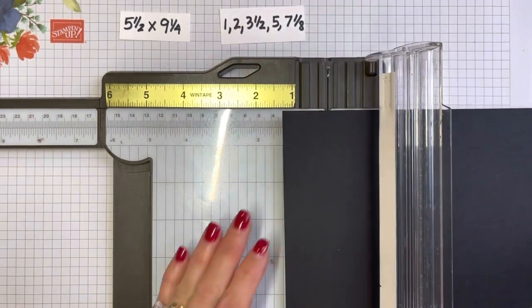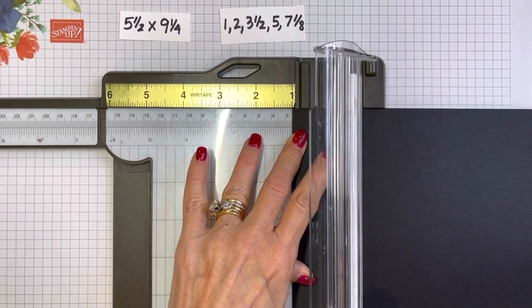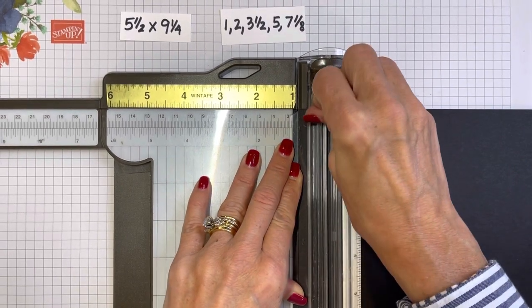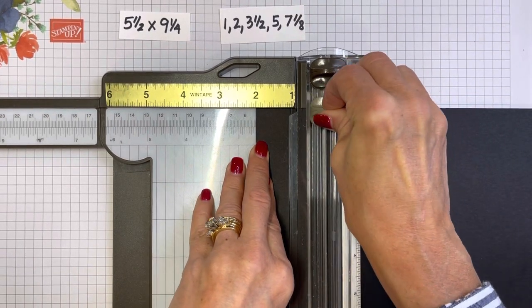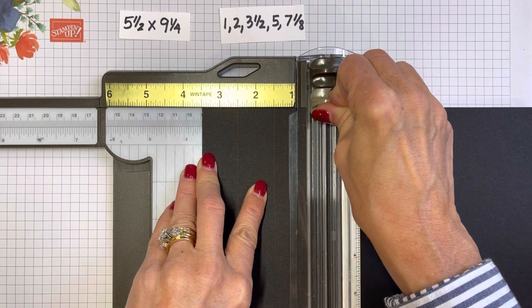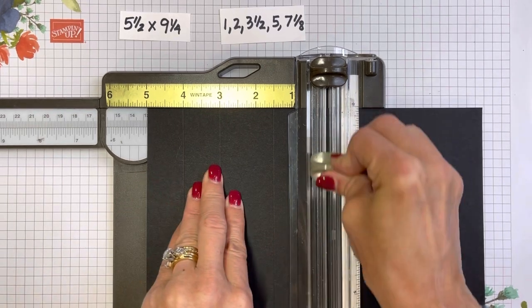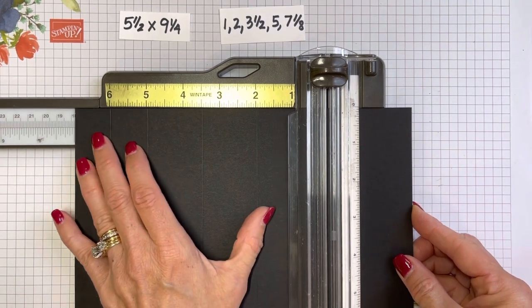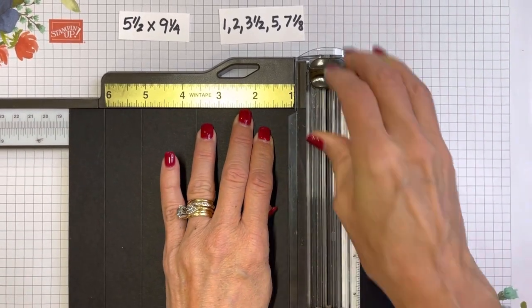I'm going to open up my trimmer so I can use the whole part of that trimmer. 5½ by 9¼. We are going to score at 1, always make sure your cutting blade is at the top when you're scoring. We're going to score at 1 and at 2.